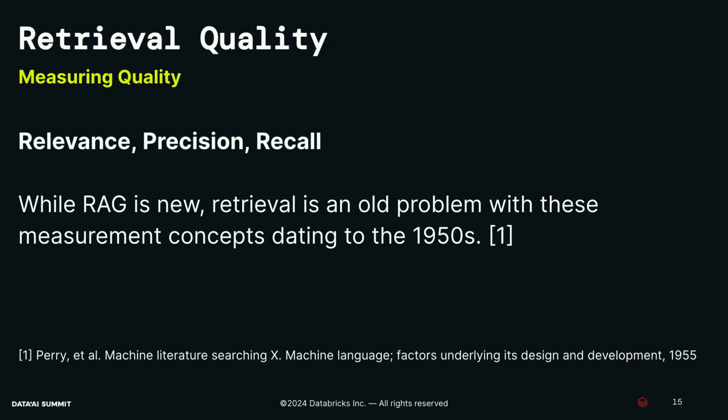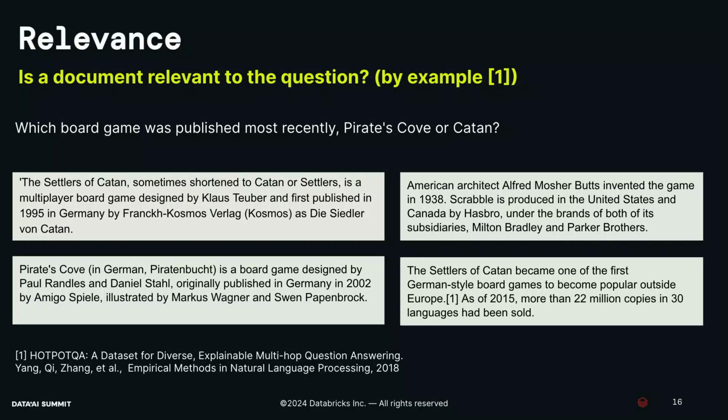For retrieval quality, there are three terms I want to explain. While RAG is new, retrieval — the idea of retrieving relevant information — is actually very old. These definitions can be traced back in literature to the 1950s. First, let's talk about relevance. Relevance is the core building block for defining retrieval metrics. For a given query and a given document, is this document relevant to this query? Here's an example from an academic paper called HotPot QA, which uses simple answers drawn from Wikipedia to explore system behaviors.